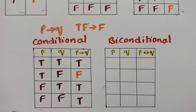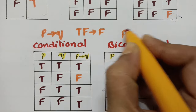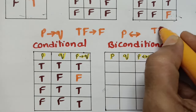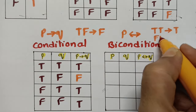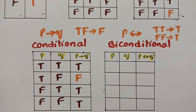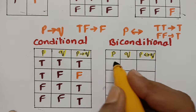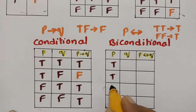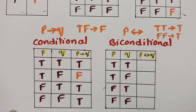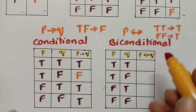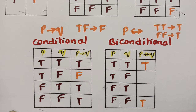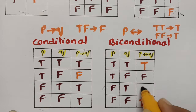Next is biconditional. For biconditional, the symbol is the double-implies arrow. For true and true, it is again true; and for false and false, it is also true. Filling the truth table: true, true, false, false for P and true, false, true, false for Q. If they have identical values — true and true — immediately write true. False and false — also true. The rest are false.